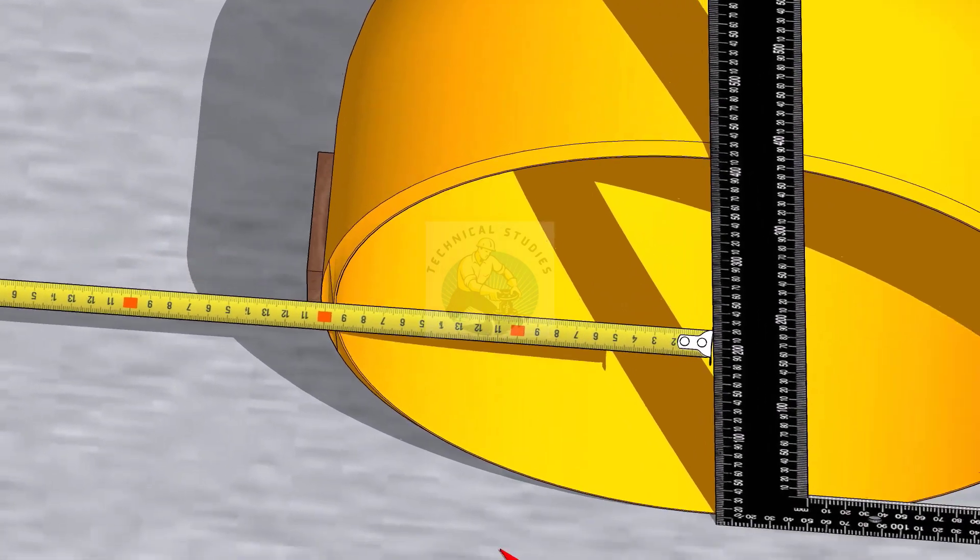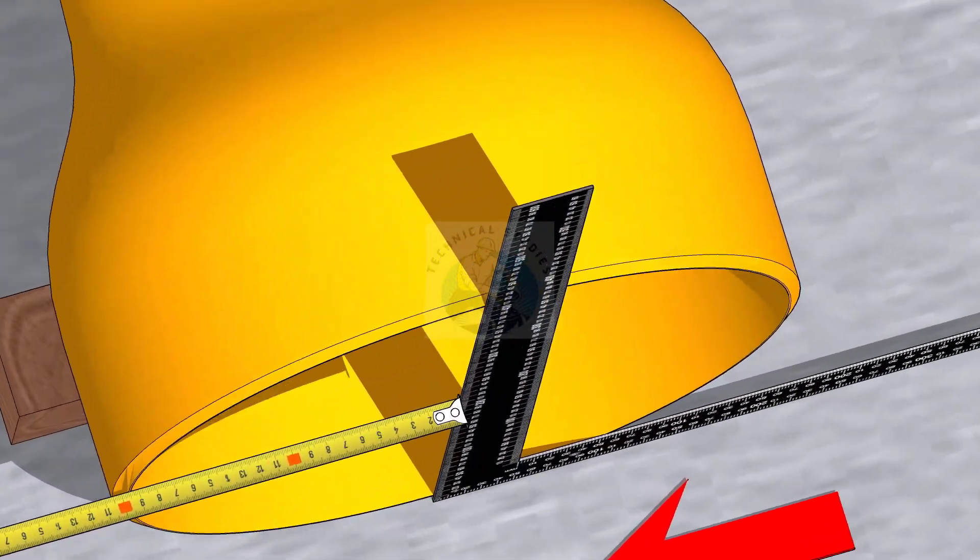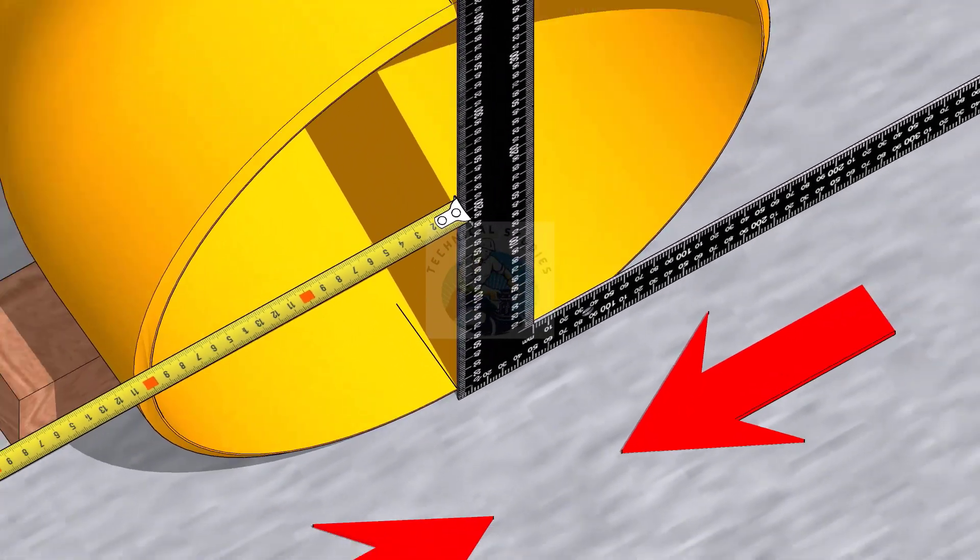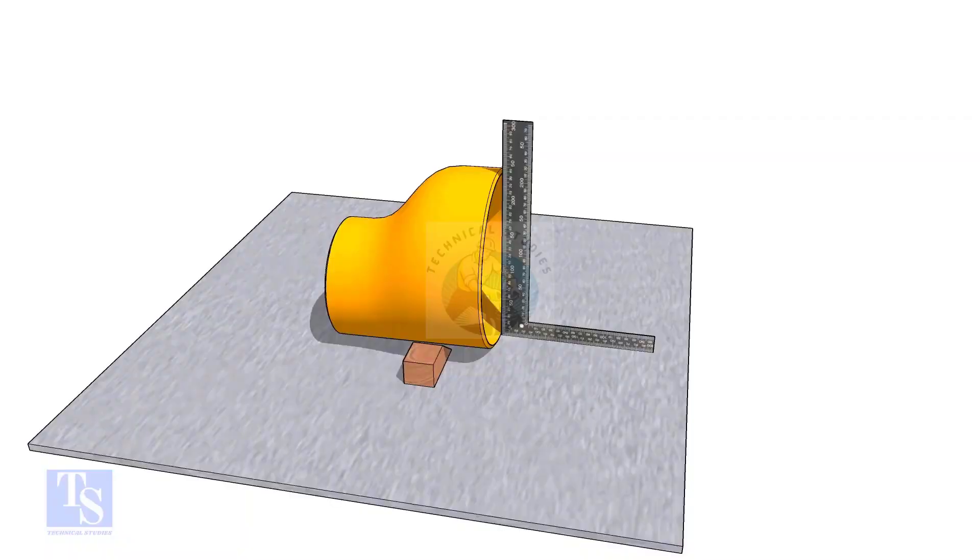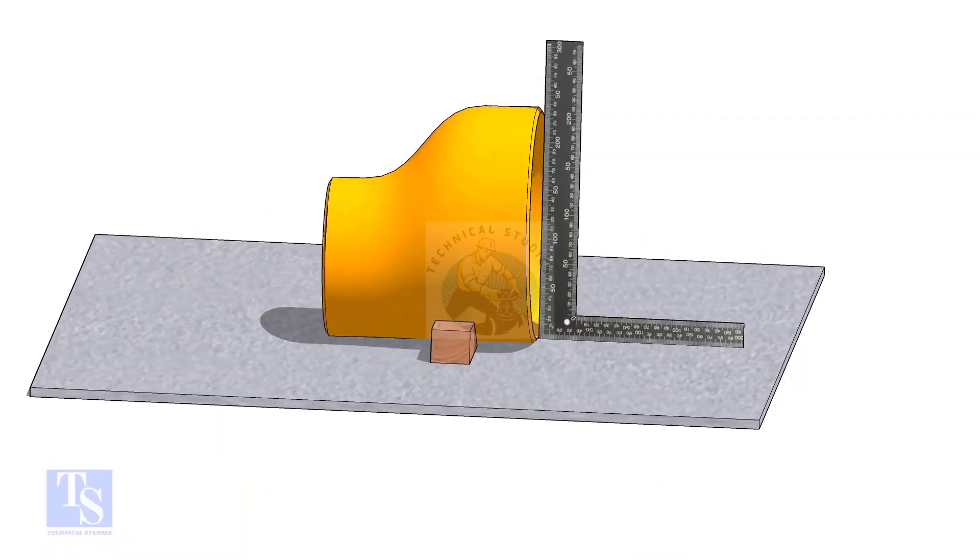Let us mark the center lines of the flange and the reducer. To mark the center line of the reducer, I am going to show a quick method, but this method is only for experienced fitters. I have attached the video link that will teach you the basic method.